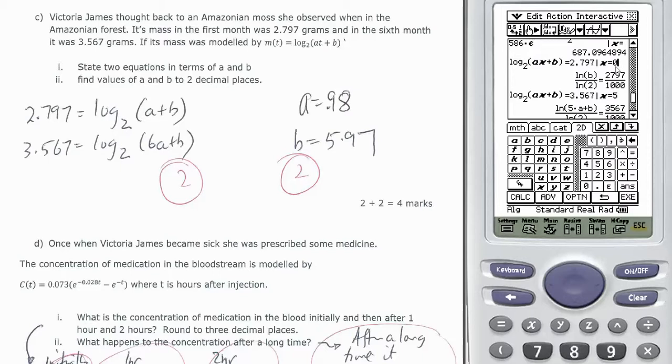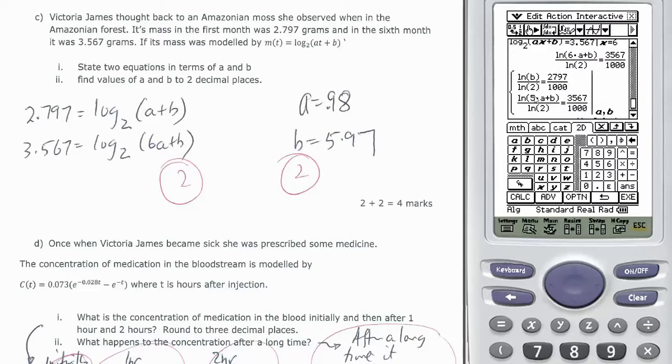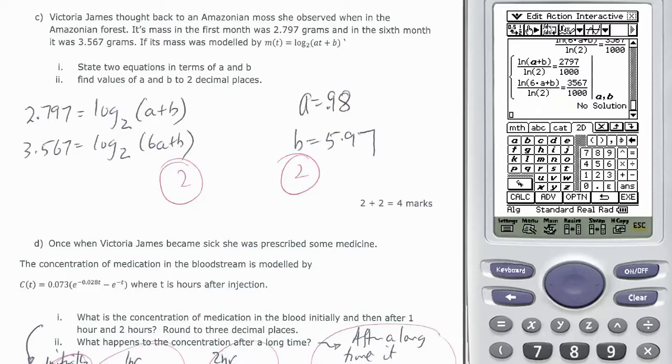How about I make that the first month and I make this one the sixth month. I re-execute each of them and this becomes 6 and this becomes a plus b. And when I go to execute I get no solution again.